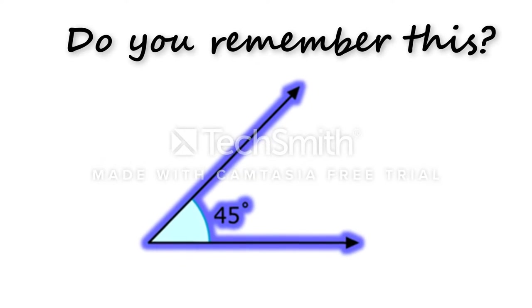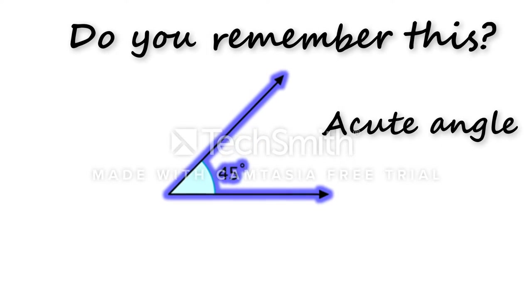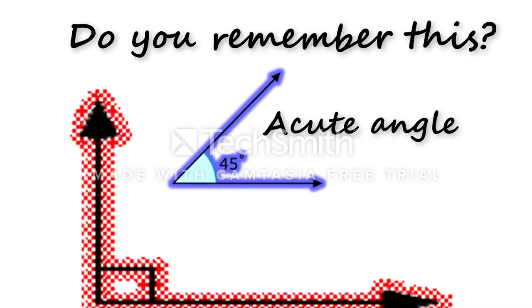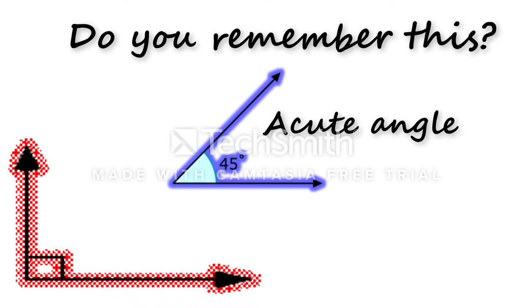Do you remember this? A 45-degree angle is what we call an acute angle. For this one, the 90-degree angle is what we call a right angle.